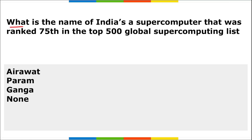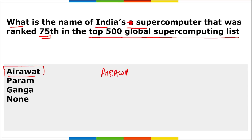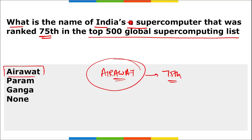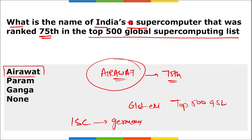Next: what is the name of India's supercomputer that was ranked 75th in the Top 500 Global Supercomputing List? Aravat is the name of the AI supercomputer. The rank of Aravat was 75th in the 61st edition of the Top 500 Global Supercomputing List, released by ISC — International Supercomputing Conference — in Germany.